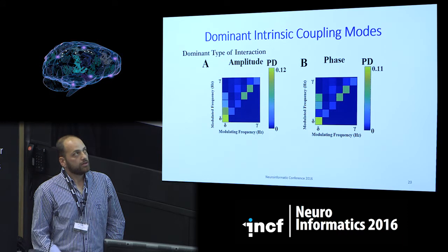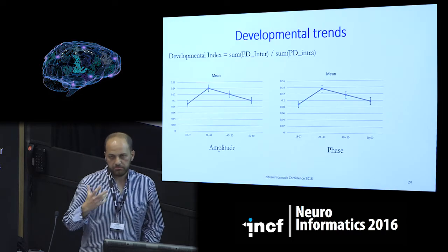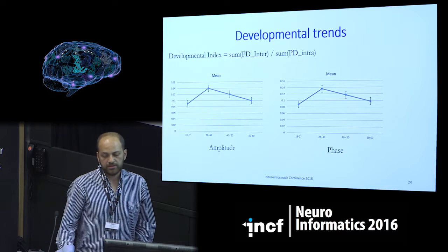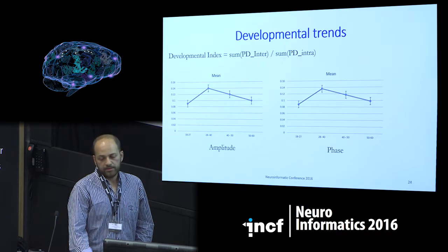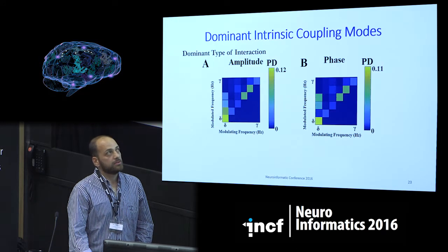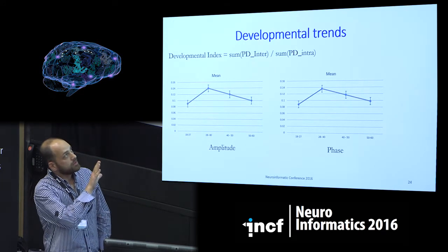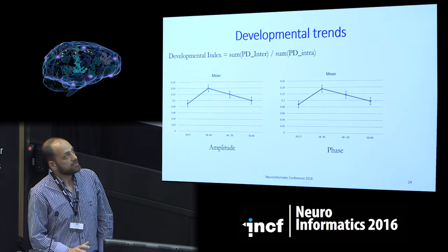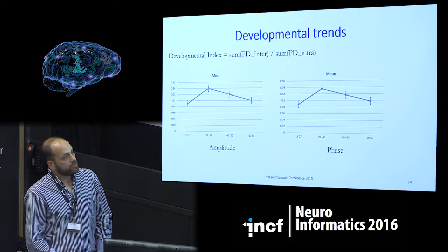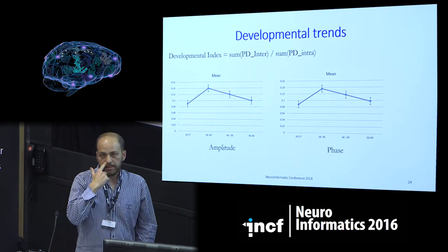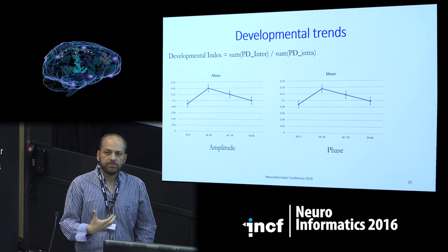You can see less cross-frequency coupling in normal aging and also in Alzheimer's disease. If we define a simplified but very informative developmental index — summing the probability distribution of inter-frequency coupling (the upper triangular) and dividing by the sum of intra-frequency coupling (the main diagonal) — independently of phase and amplitude, and integrate across four age groups, you can see a small increment between the first and second decades and a decrement in the 50-to-60 group compared to 28-to-40, in both amplitude and phase. It is very informative to integrate all different types of interactions simultaneously into one single functional brain network.